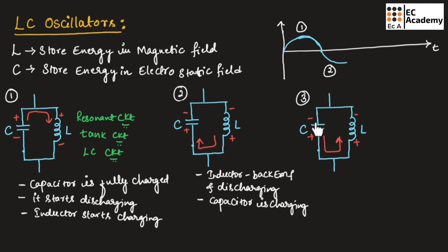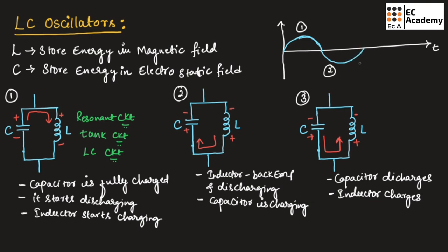In the third step, once the capacitor is fully charged again, the capacitor will start discharging and the inductor will start charging. The capacitor discharges in the opposite direction since the polarity has changed. This process continues — once the inductor is fully charged, it produces back EMF and discharges in the opposite direction — producing a sinusoidal waveform. This is how the tank circuit operates.